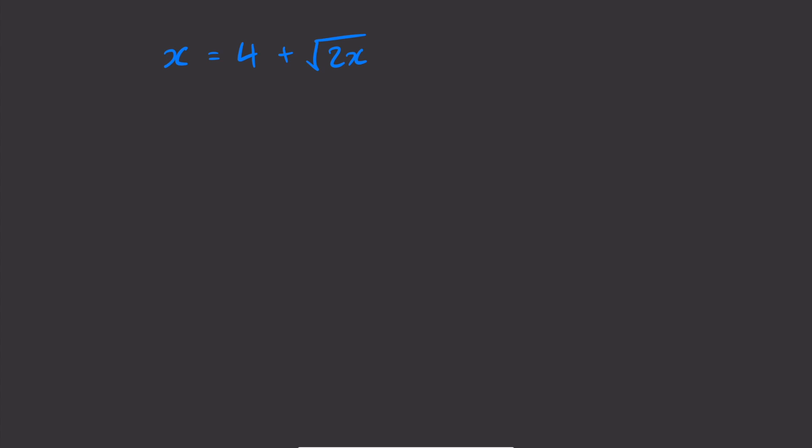So probably the most straightforward way to solve this is firstly to get that plus 4 over to the left hand side. So we're going to have the square root of 2x equal to x take 4, and then square both sides. So to get rid of that square root we want to square both sides. So the square root of 2x squared is just 2x, and then on the right hand side we have x take 4 squared.